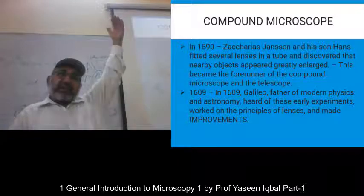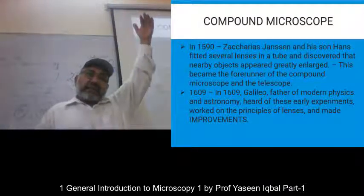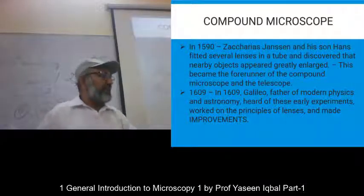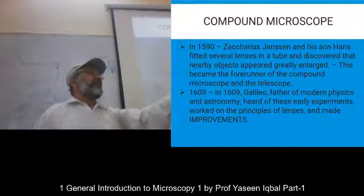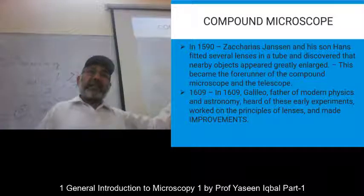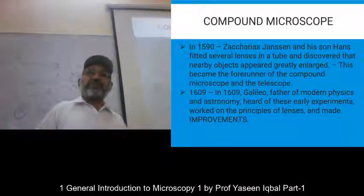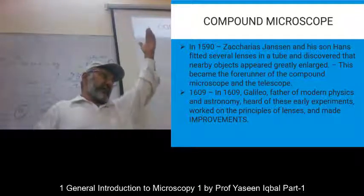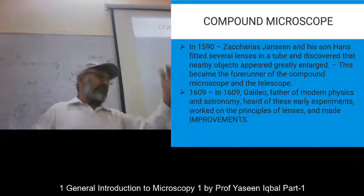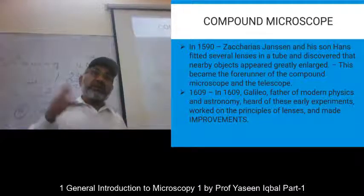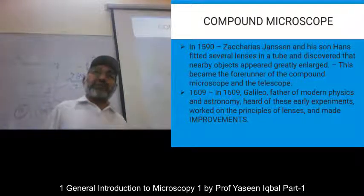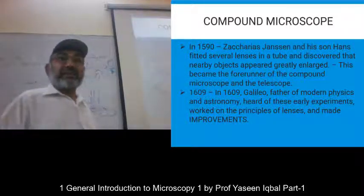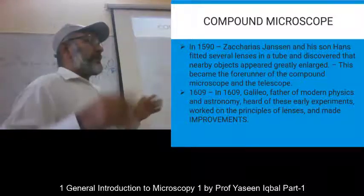Electrons coming from the electron gun, scattered by the sample atomic planes and coming to form the image — this is basically the practical display of the Schrödinger wave equation. The Schrödinger wave equation governs the scattering, the flow, and the transmission of electrons through the sample. You are basically solving the Schrödinger wave equation, and that is the image. So it is the practical representation of quantum mechanics. Microscopy is a huge field.